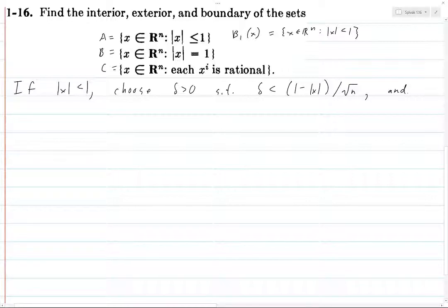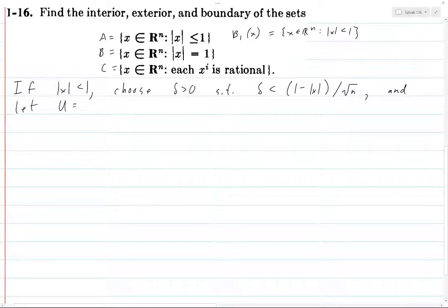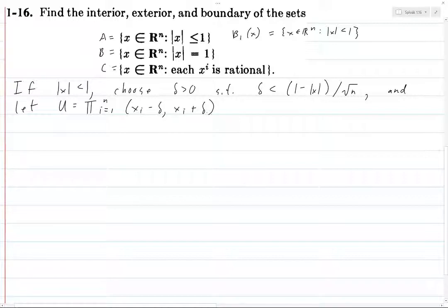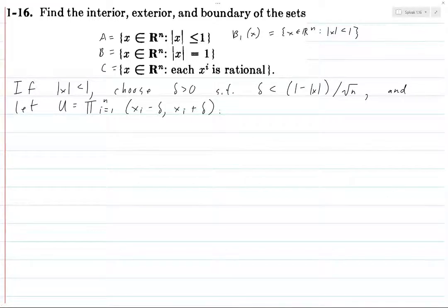Let U be the product from i equals 1 to n of (xᵢ minus delta, xᵢ plus delta). This is an open rectangle around x, and the open interval in each coordinate is given by (xᵢ minus delta, xᵢ plus delta). Certainly x is contained in U, but we need to prove that U is contained in A.